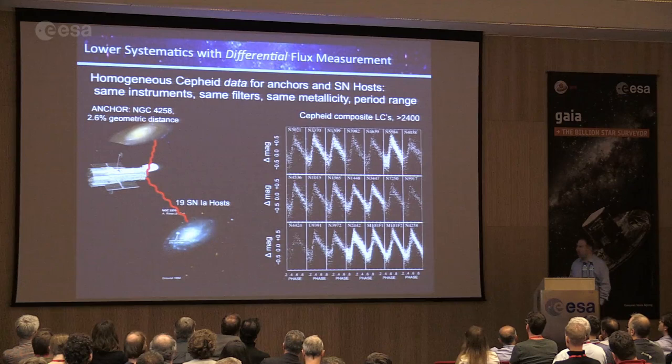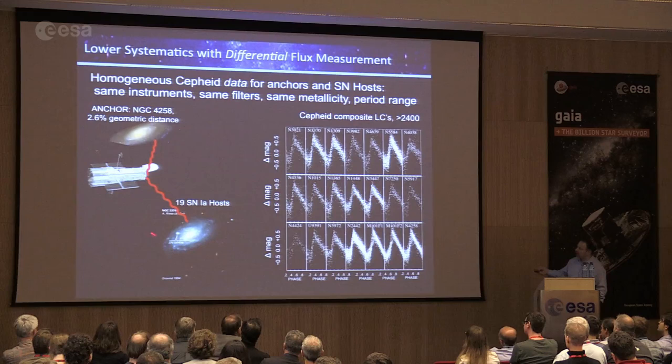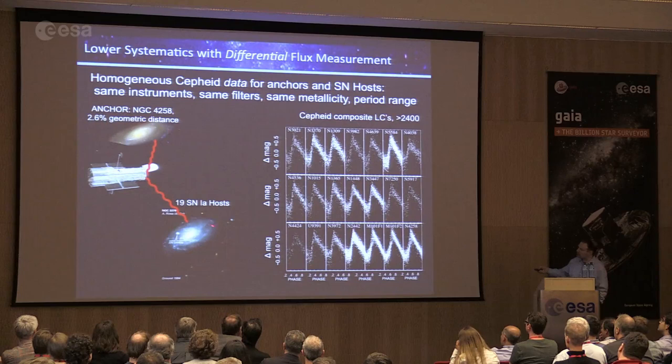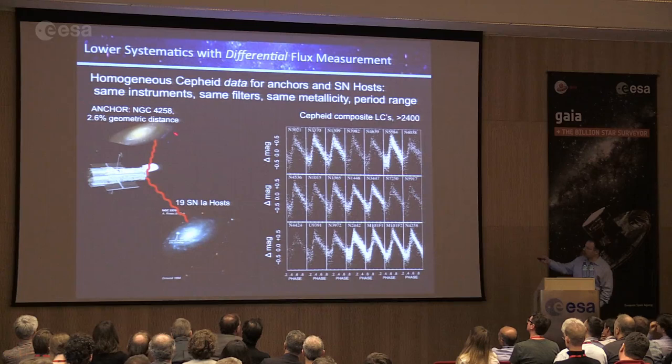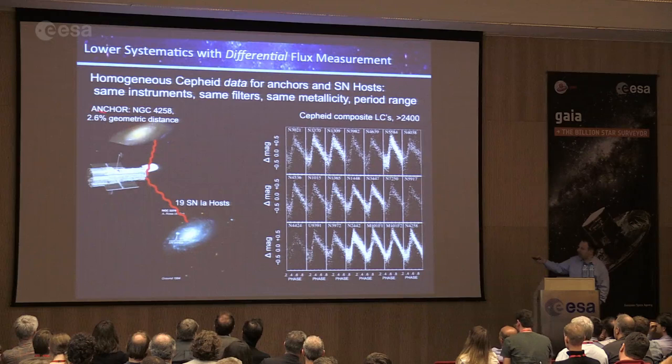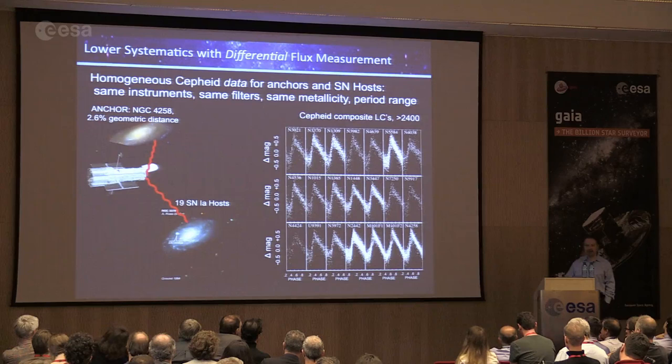A key aspect of achieving high precision is using the same telescope whenever possible to measure Cepheid brightness in both the supernova host galaxies and the geometrically calibrated location. For example, in NGC 4258 — which has the black hole, maser, and 2.6% distance — if you observe Cepheids in both places with the same instrument, concerns about zero points and photometric consistency cancel out. That's one of the best ways we've reduced systematic errors.